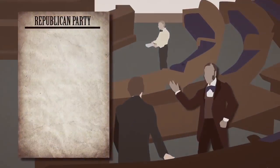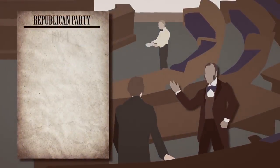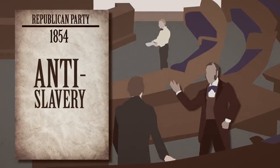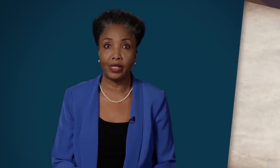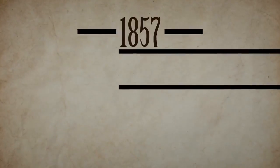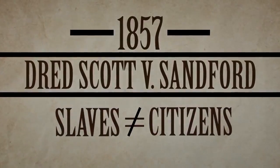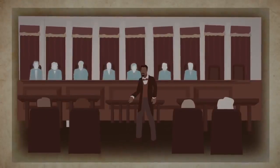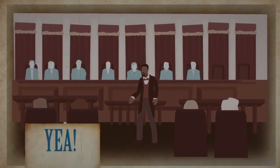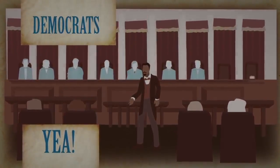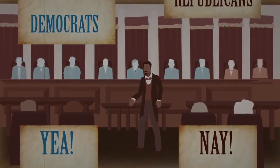In contrast, the Republican Party was founded in 1854 as an anti-racist, anti-slavery party. Its mission was to stop the spread of slavery into the new Western territories with the aim of abolishing it entirely. This effort, however, was dealt a major blow by the Supreme Court in the 1857 case Dred Scott v. Sandford. The Court ruled that slaves aren't citizens — they're property. The seven justices who voted in favor of slavery? All Democrats. The two justices who dissented? Both Republicans.